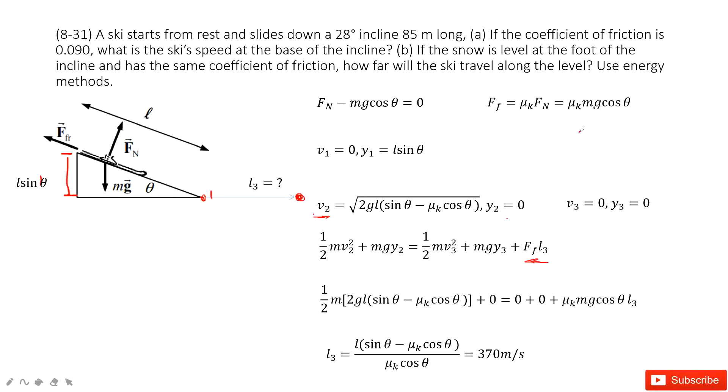This friction is mu_k mg cos theta 0. We input it inside. We input all the known quantities. We can find L3 is in this equation. It is 370 meters. That's all. Thank you.